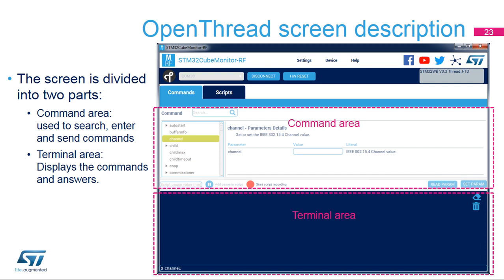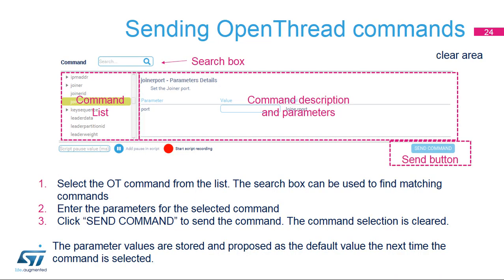The Open Thread screen is divided into two areas. The top part is the command area, which provides a list of commands with additional information about each command and the parameters to fill in — very useful for commands that are not frequently used to avoid checking documentation for parameter descriptions. The bottom part is the terminal area, where commands and responses are logged. It is also possible to directly type a command in the line at the bottom. To send a command, select it from the command list — commands are grouped in a tree view, and those with a triangle on the left have subcommands. It is possible to search commands and subcommands using the search box at the top. When a command is selected, its information and related parameters are displayed on the right.